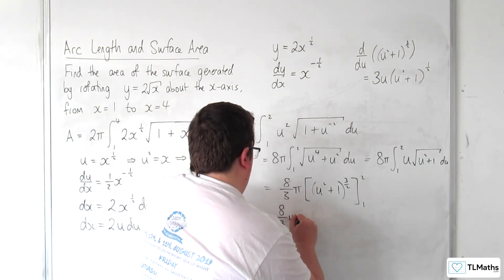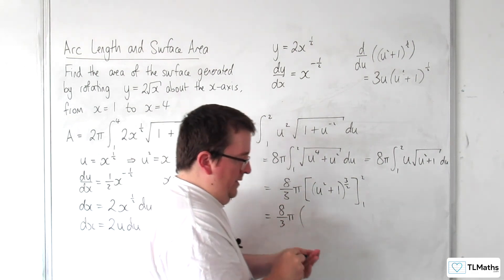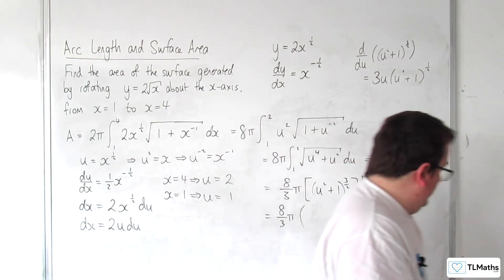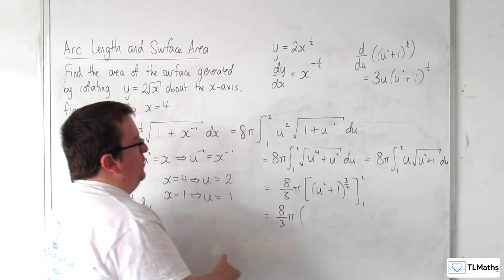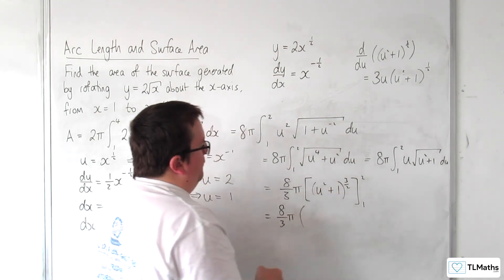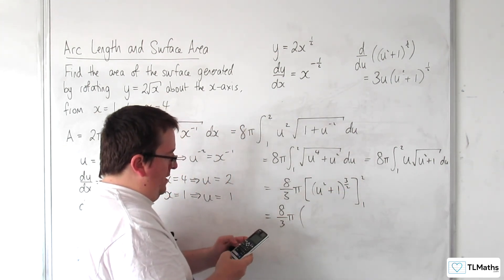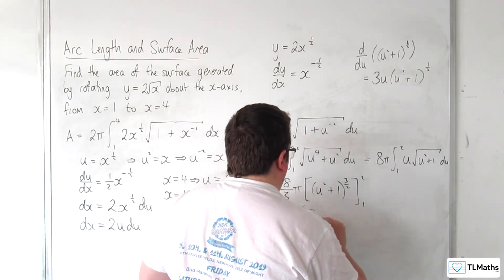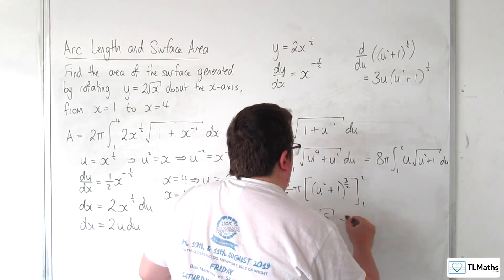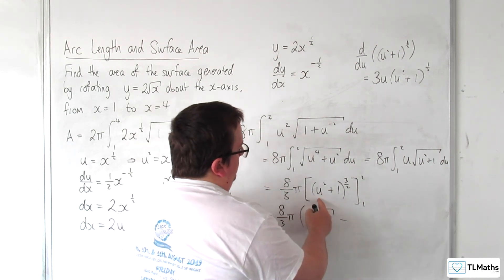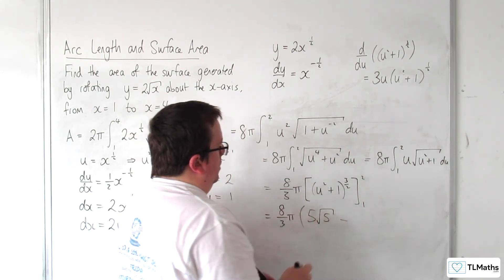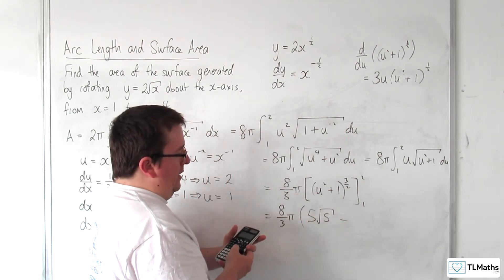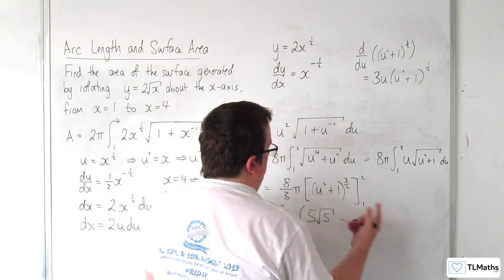8 thirds pi times by, let's see what the calculator can make of this. So I've got 2 going in, so that's going to get me 5. So I've got square root of 5, and then cube that gets us 5 root 5. And then substituting in the 1, I'm going to get 2. So that's root 2 cubed, which is 2 root 2.